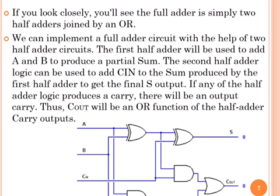The second half adder logic can be used to add carry-in to the sum produced by the first half adder to get the final S output. If any of the half adder logic produces a carry, there will be an output carry. Thus, carry-out will be an OR function of the half adder carry outputs.